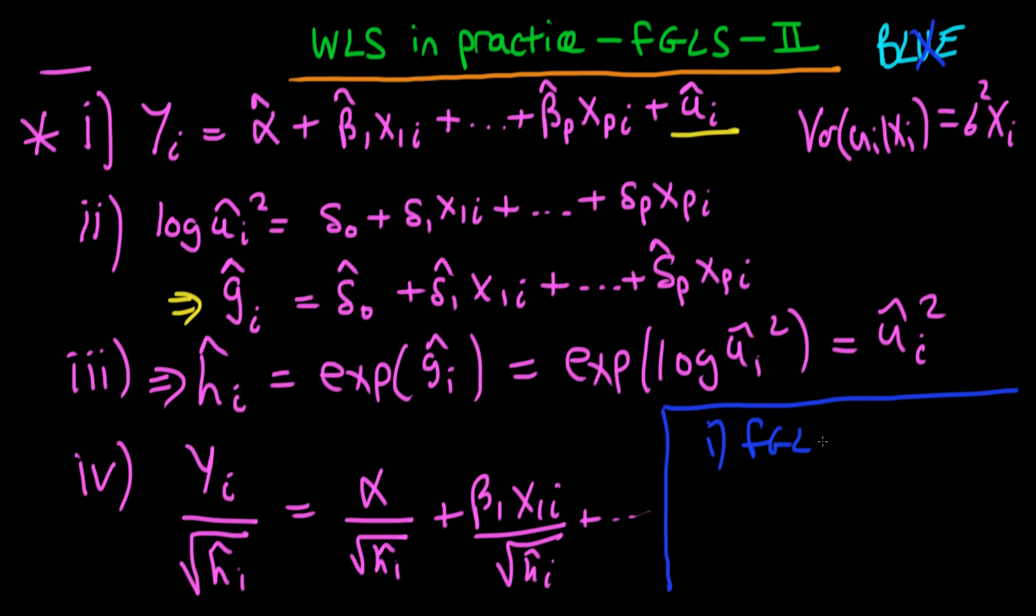Well it actually turns out that it is no longer unbiased. So that's definitely something which you need to be wary about. So first of all, feasible GLS is actually biased. So that means in a finite sample the distribution isn't centered around the true population parameters.